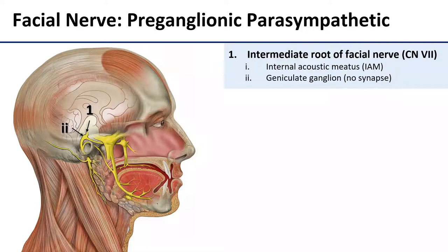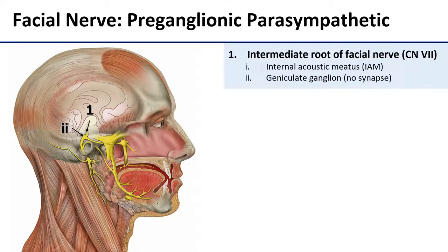Despite the gland itself being located in the orbit, the preganglionic parasympathetics serving the lacrimal gland actually originate in the intermediate root of the facial nerve. They're going to travel through the internal acoustic meatus and then pass through the geniculate ganglion, which is a sensory ganglion associated with the facial nerve. They just pass right through there without synapsing.